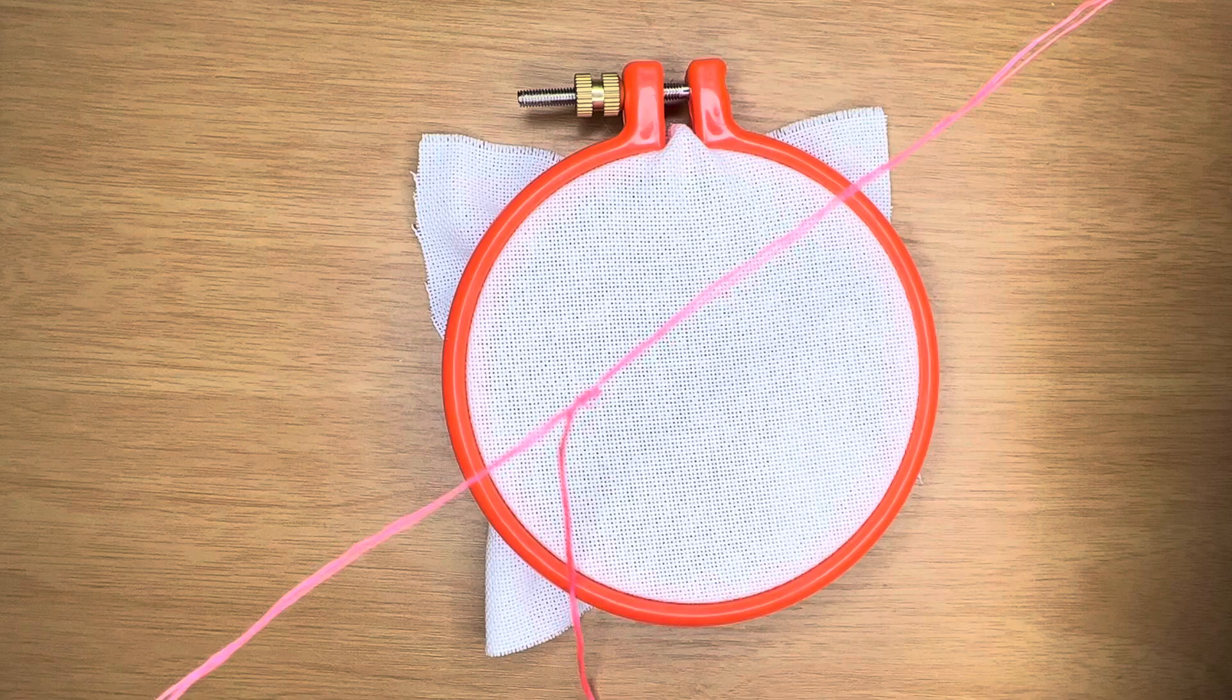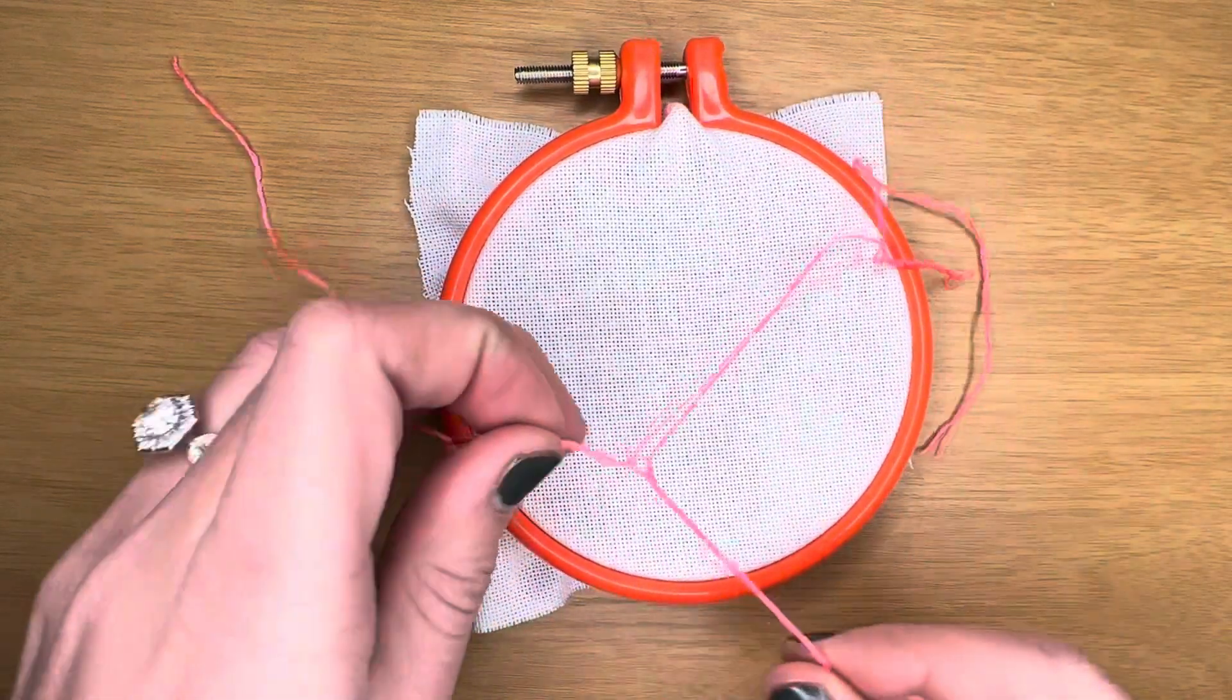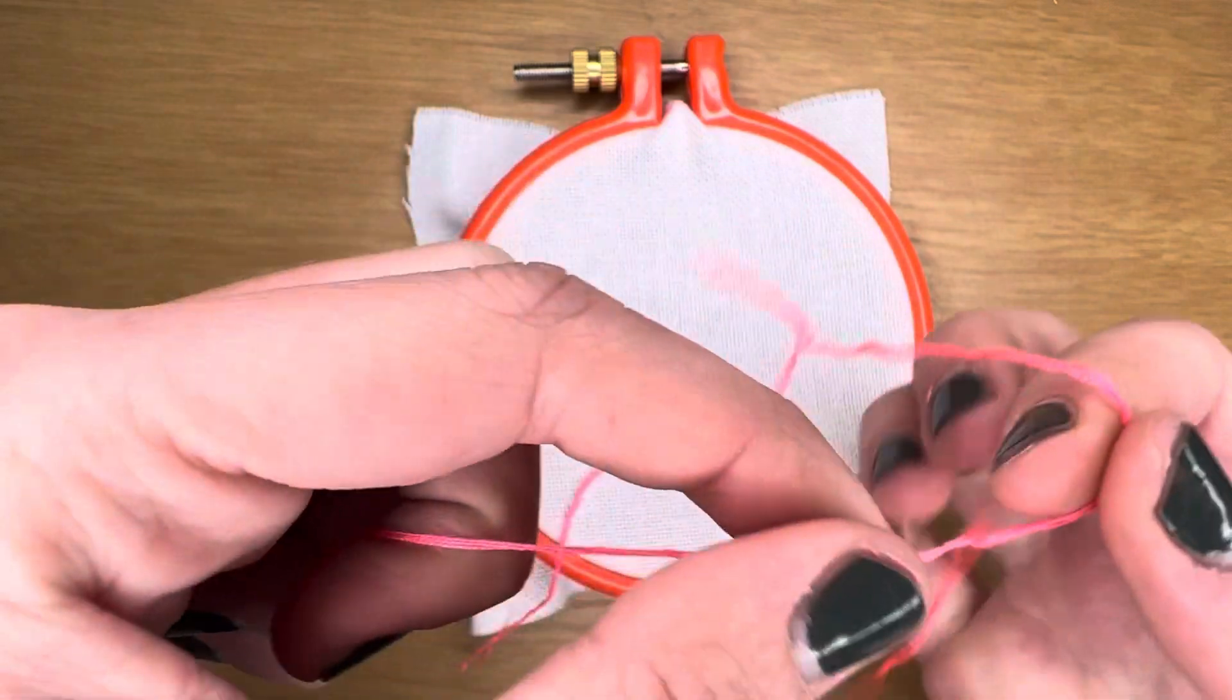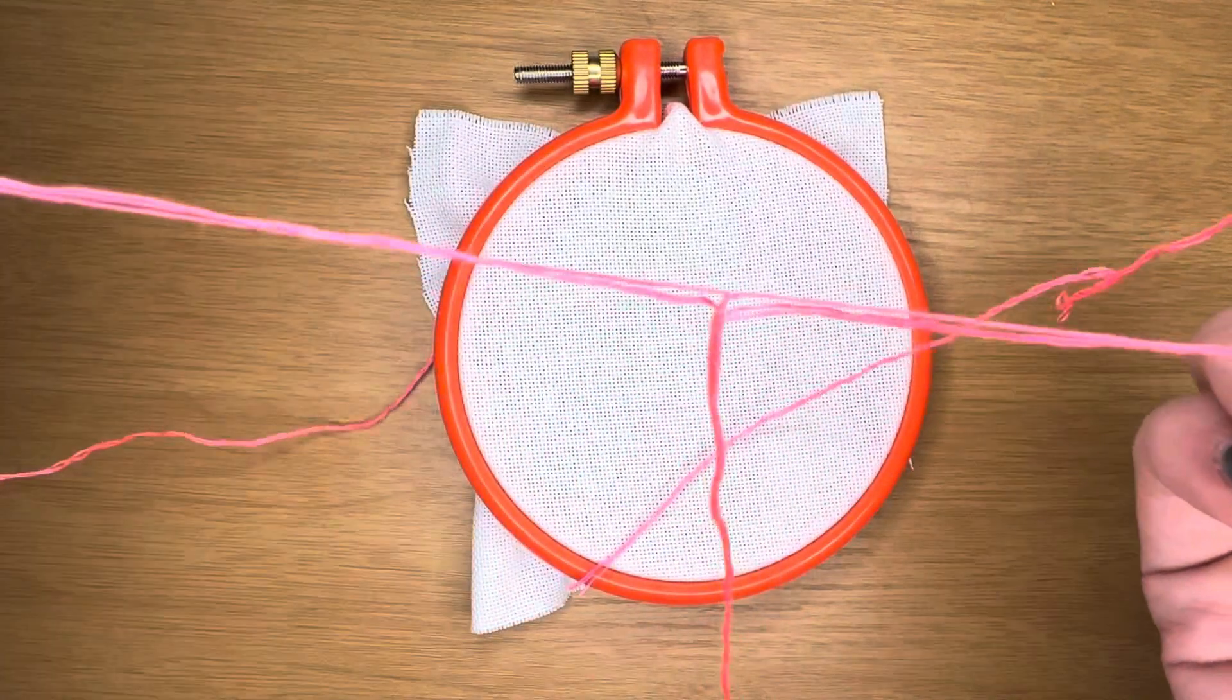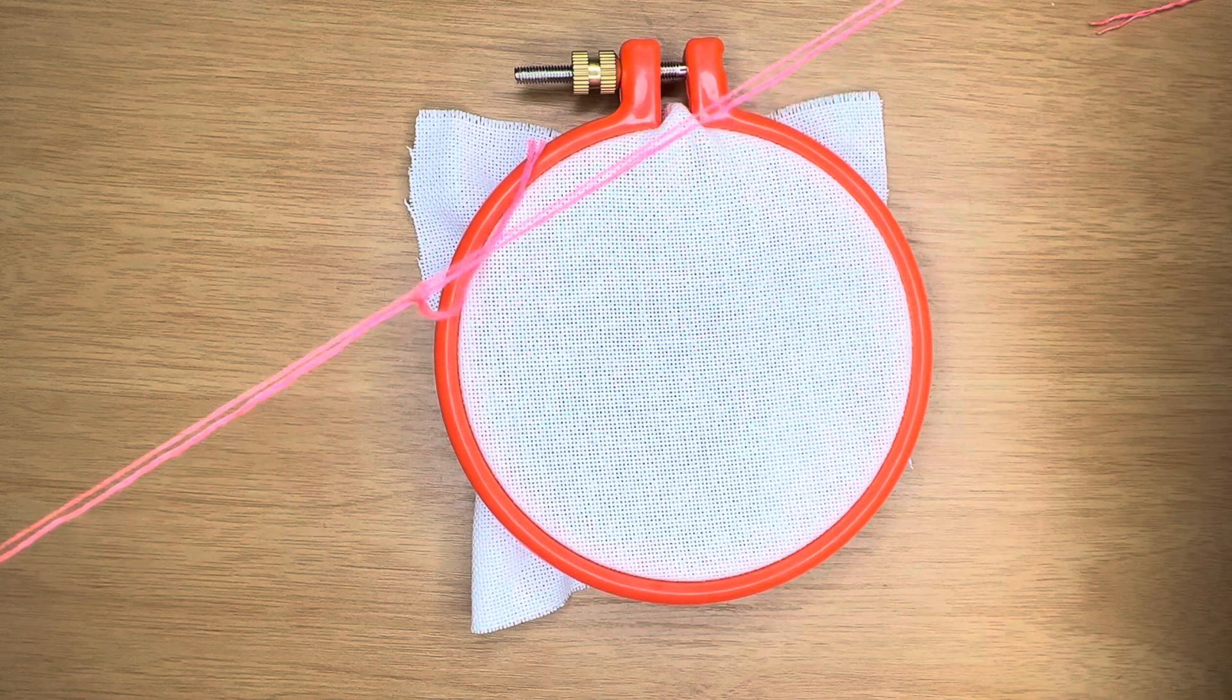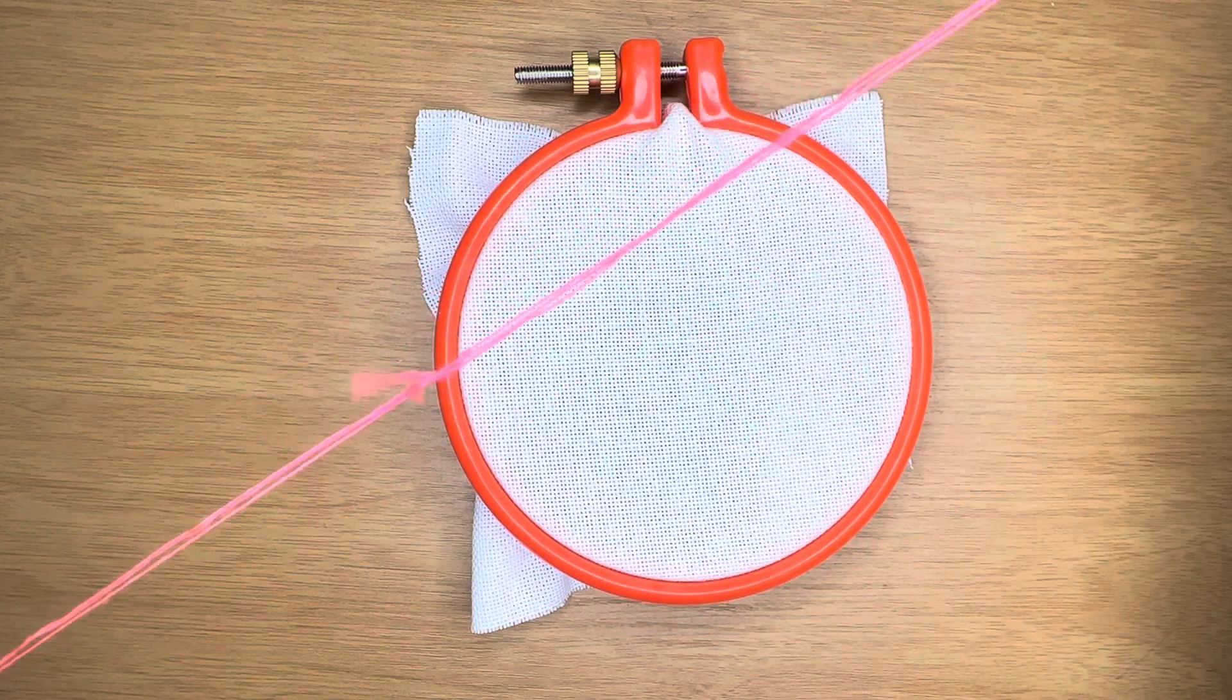Now if it starts to get tangled like this, that will occasionally happen. Just go back and untwist a little bit back to the center where it was getting tangled and move from there. And it should easily separate just like that.